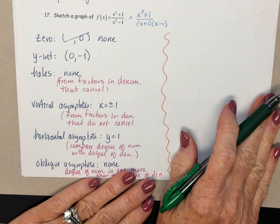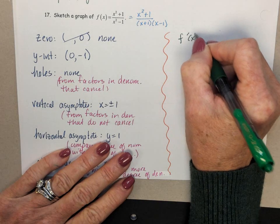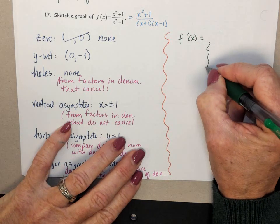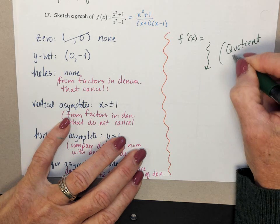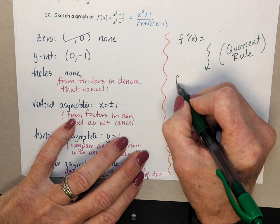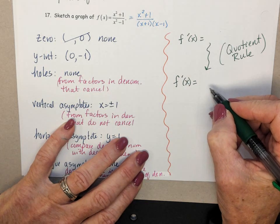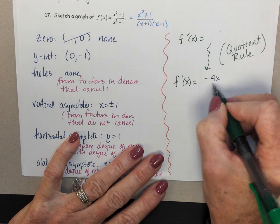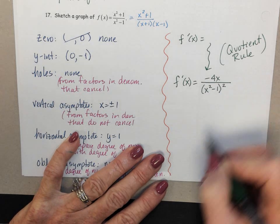To find f prime of x, we would have to do a quotient rule. And I'm gonna save us some time and just tell you what that derivative is. You should be able to work through that on your own, but just in the interest of time. That quotient rule is negative 4x over x squared minus 1 quantity squared.